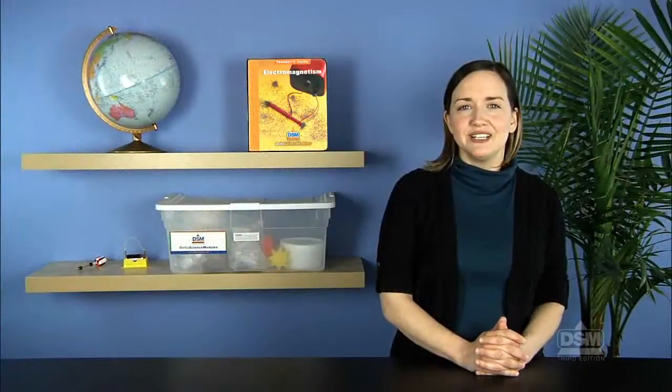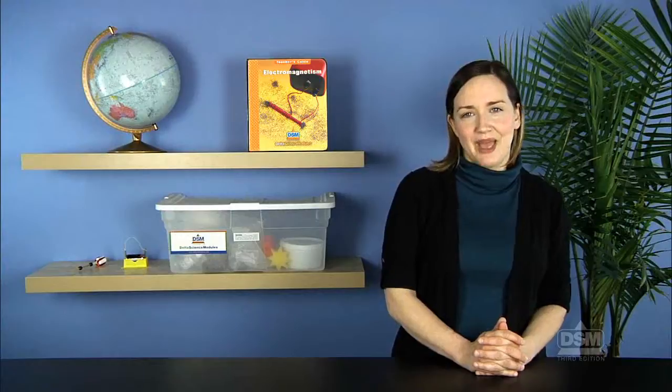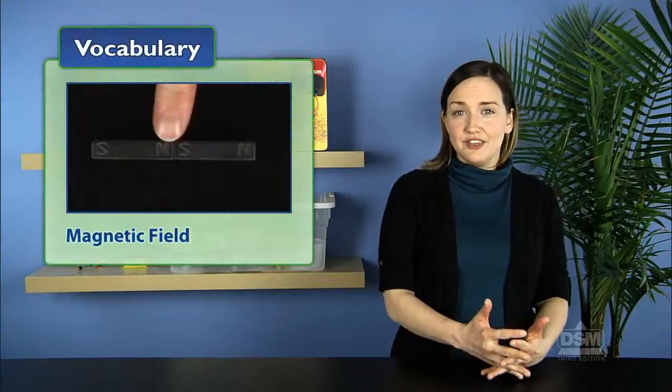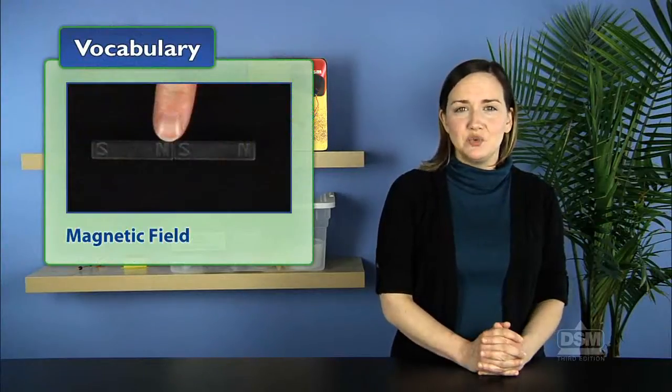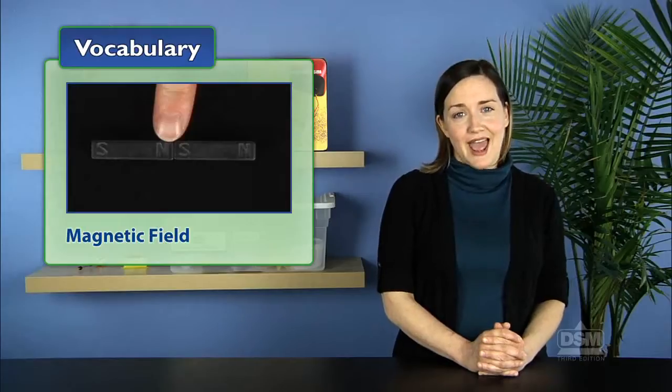Explain that the pattern of filings maps out the invisible field lines that make up the magnetic field of the magnets. The magnetic field is the area around the magnet in which the magnetic force of the magnet acts.